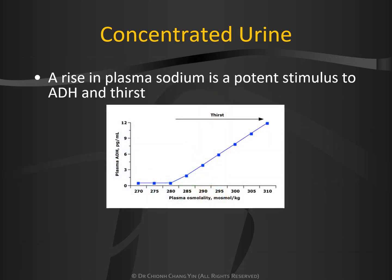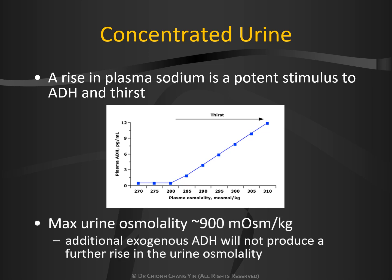A rise in plasma sodium is a potent stimulus for ADH and thirst. Note that the rise in ADH is linearly proportional to the plasma osmolality. The maximum achievable urine osmolality — the most concentrated urine you can get — is 900 milliosmol per kilogram. At such maximum concentrated urine, even with additional exogenous antidiuretic hormone, there will not be a further rise in the urine osmolality.